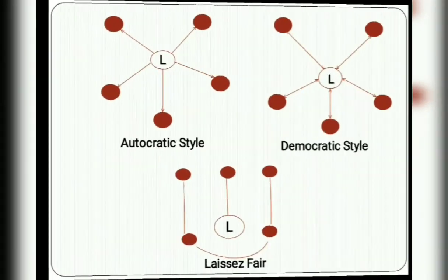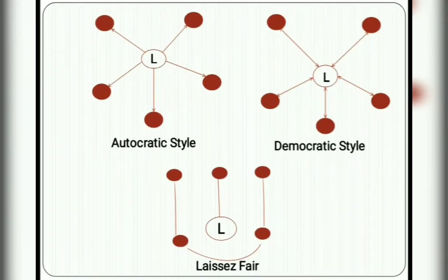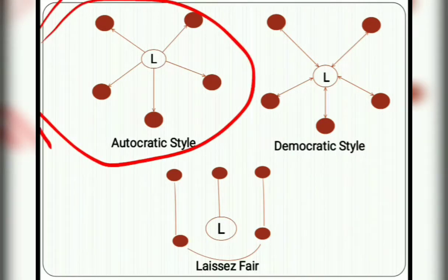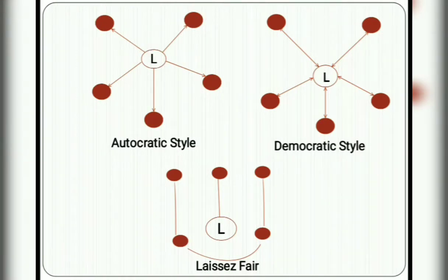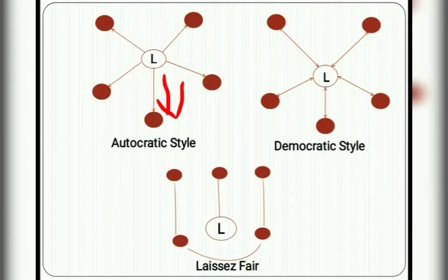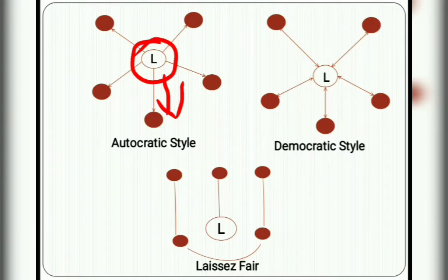As shown in the diagram for the autocratic leader: here is the leader and these are the employees (subordinates). The arrows go only from the leader toward the employees — the leader gives orders and employees follow those orders. The decision-making process is centralized with the leader only; employees are not included. This is the autocratic style of working.